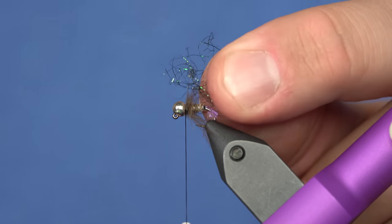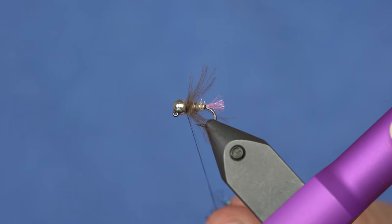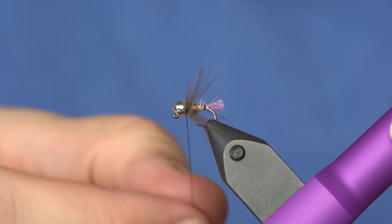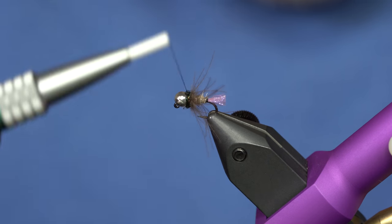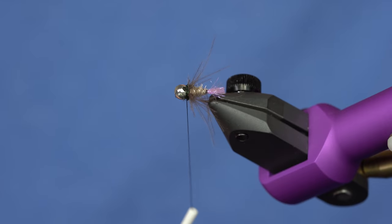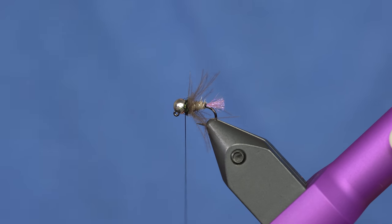This is like some black peacock ice dub. You can use any flashy, darker colored dubbing at the head of this fly. And just dub it down nice and tight and wrap it on there just like that.